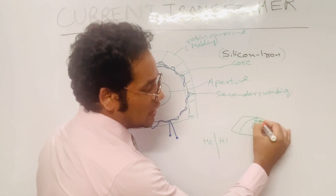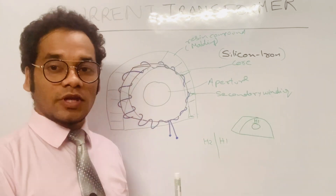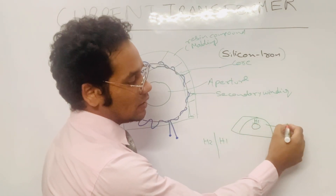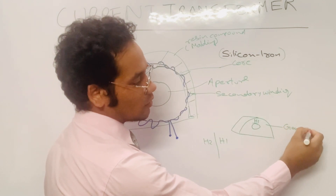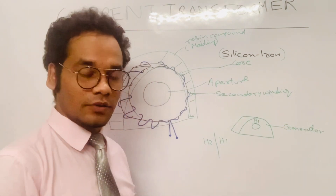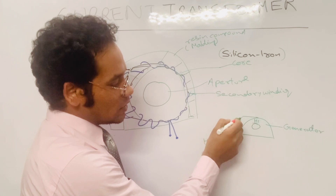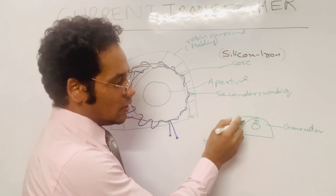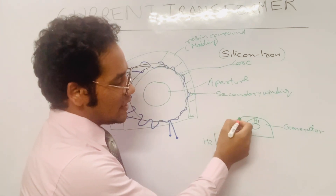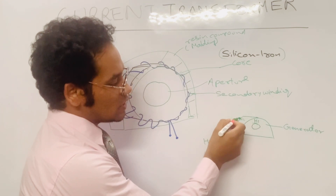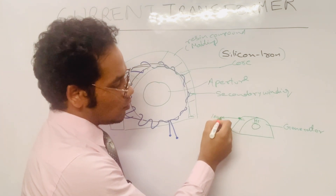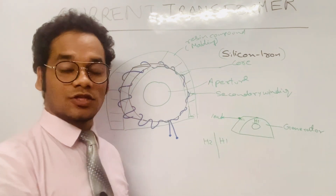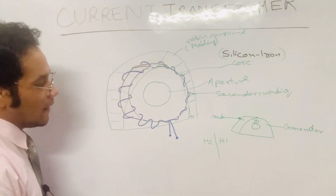H1 tells you that this is the side of the current transformer which should face the generator. The other face, H2, should be facing the load. So H1 faces the generator side and H2 faces the load side.